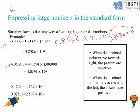For another example, if it is 4,05,980, we can write it as 4.05980 into 10 to the power 5. Whenever we are moving the decimal number towards the left, the powers are positive and whenever we are moving the decimal point to the right hand side, the powers are negative.